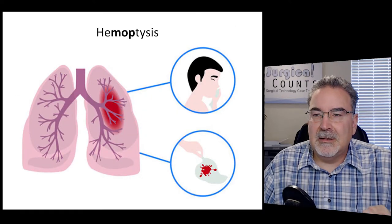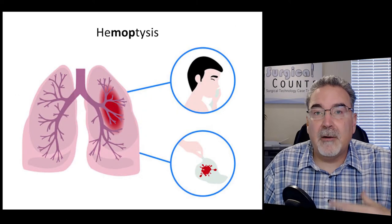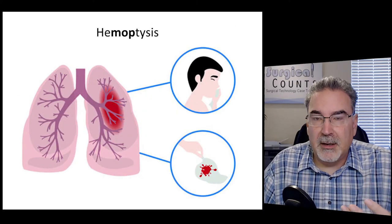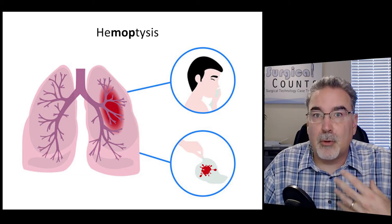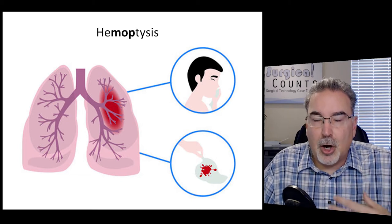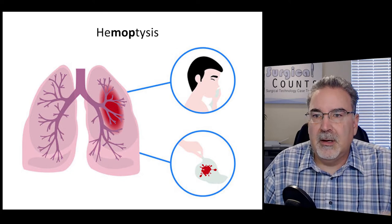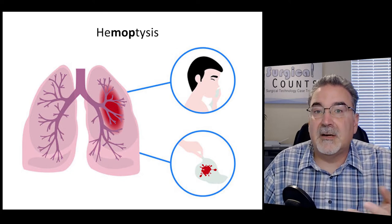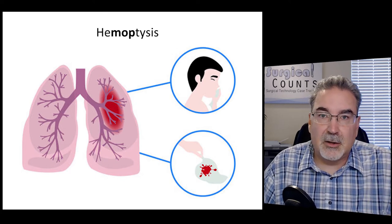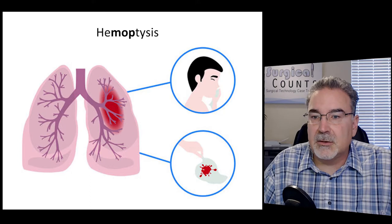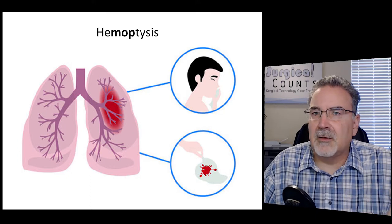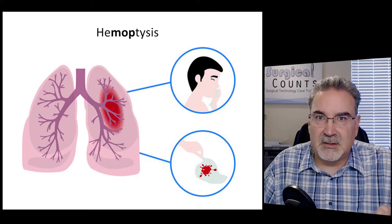Hemoptysis — this is coughing up blood that originates from the lungs or the bronchi, and you're coughing it up through the trachea and out through the mouth. There are several conditions that can cause this: cancers, tuberculosis, and a lot of other things can cause hemoptysis.